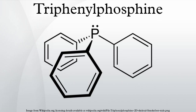Cl2 adds to PPh3 to give triphenylphosphine dichloride, which exists as the moisture-sensitive phosphonium halide. This reagent is used to convert alcohols to alkyl chlorides in organic synthesis. PPh3 is a weak base, but does form stable salts with strong acids such as HBr. The product contains the phosphonium cation, HPPh3⁺.